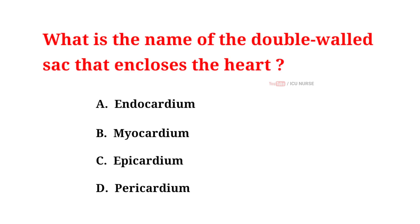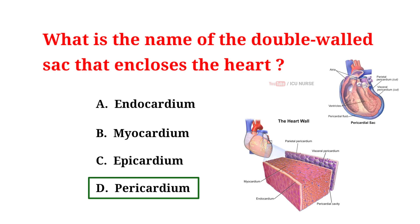What is the name of the double-walled sac that encloses the heart? A. Endocardium. B. Myocardium. C. Epicardium. D. Pericardium. And the correct answer is D: pericardium. The double-walled sac that encloses the heart is called the pericardium. Its function is to protect the heart, anchor it within the chest cavity, and reduce friction between the heart and surrounding structures by providing a lubricated environment.